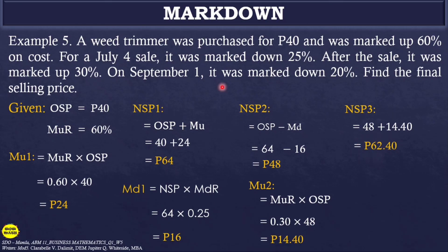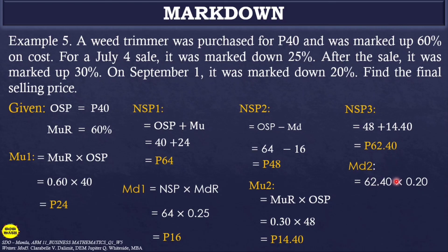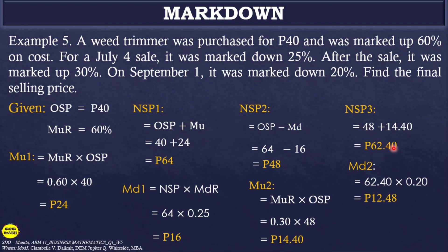On September 1, the weed trimmer was marked down again by 20% from 62.40 pesos. Markdown 2 = 62.40 × 0.20 = 12.48 pesos. Final Selling Price = 62.40 − 12.48 = 49.92 pesos.